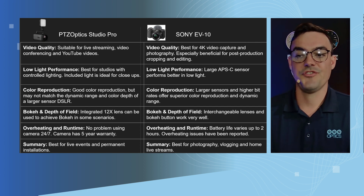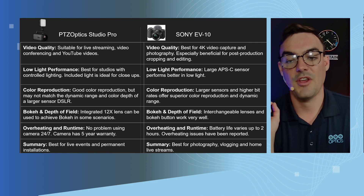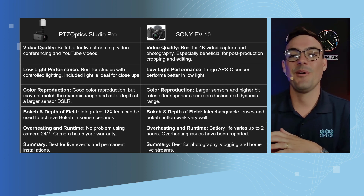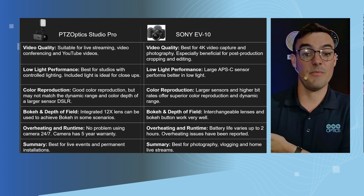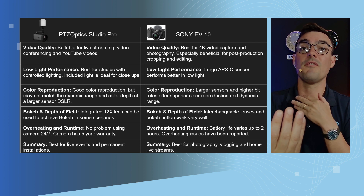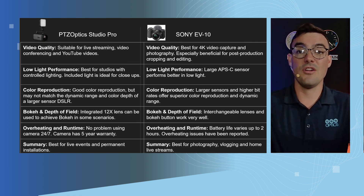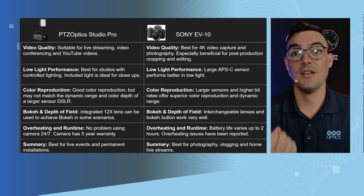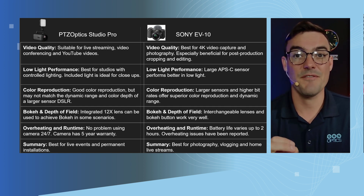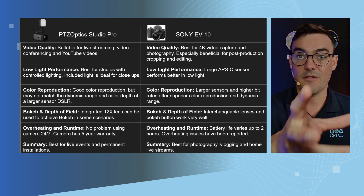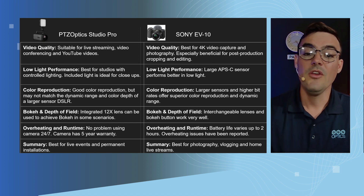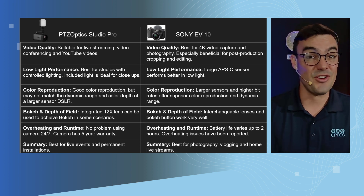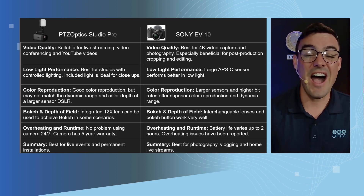The Sony EV10 has a larger sensor and a higher bit rate, so its color reproduction can be superior. From a bokeh perspective — a lot of our customers are asking about bokeh — with the interchangeable lenses and the ability to dial in the bokeh on the Sony EV10, yes, you will get a better bokeh. On the Studio Pro, if you provide enough space between the subject and the background and use that optical zoom, you are able to achieve bokeh. It also has a TOF — time-of-flight — focus system that allows it to do that really quick focusing you saw in the test footage.